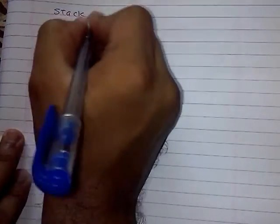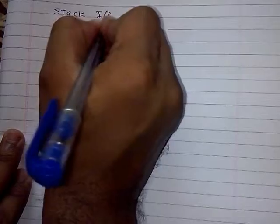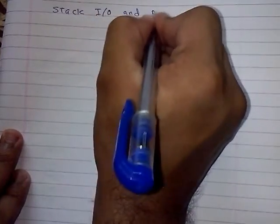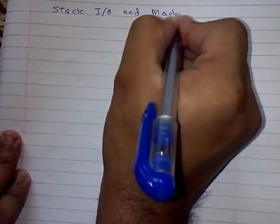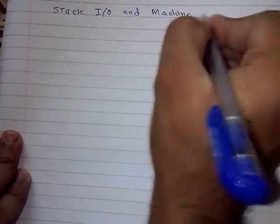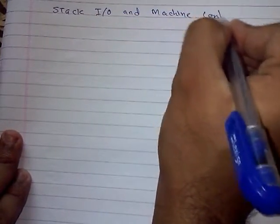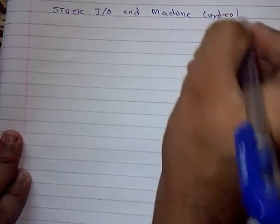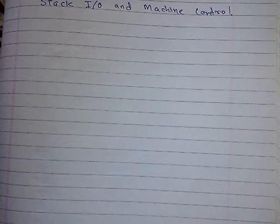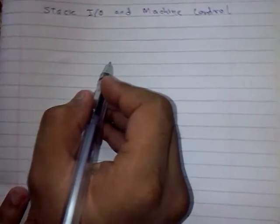The instruction set that we have also includes stack and I/O and machine control instructions. Stack I/O instructions are used to manipulate the stack. Input/output instructions have instructions like PUSH and POP, with which the content of the stack can be changed.